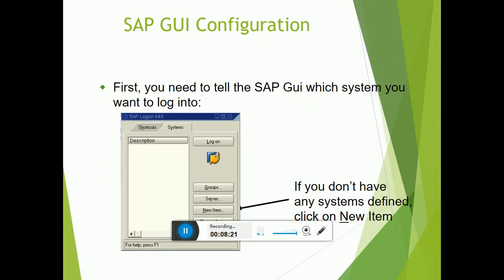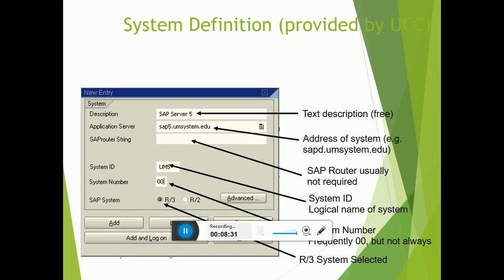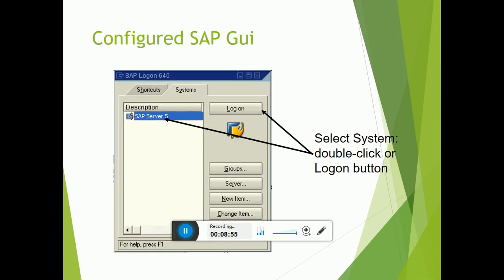This is how SAP GUI looks. First, you need a configuration of the system you want to log into. Click the 'New Item' button, then enter the description of your system, the application server IP address, the system ID (a logical name), the system number, and the system type R3. Save this, and your server property — for example 'SAP Server 5' — will be saved and ready to connect.